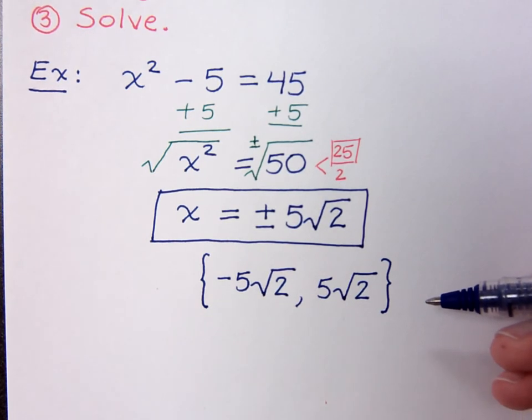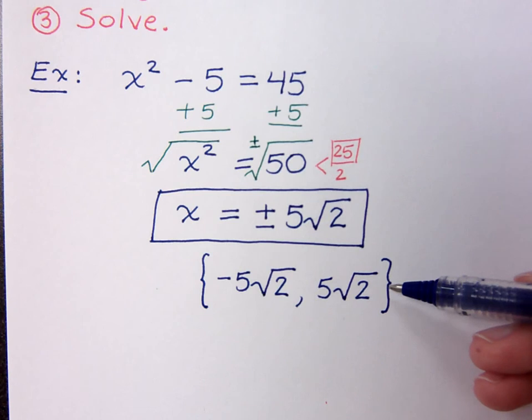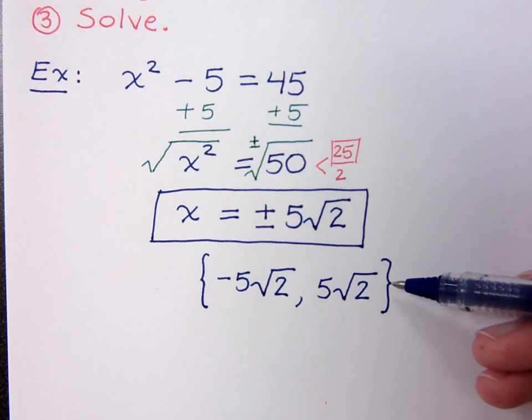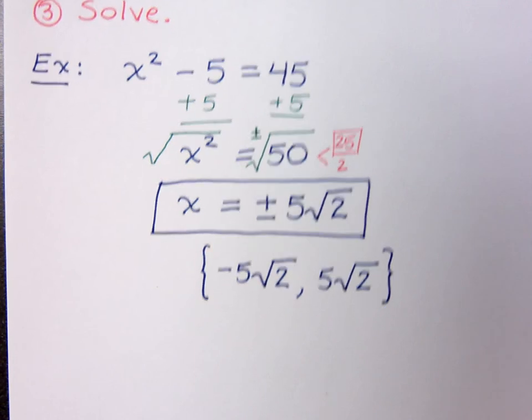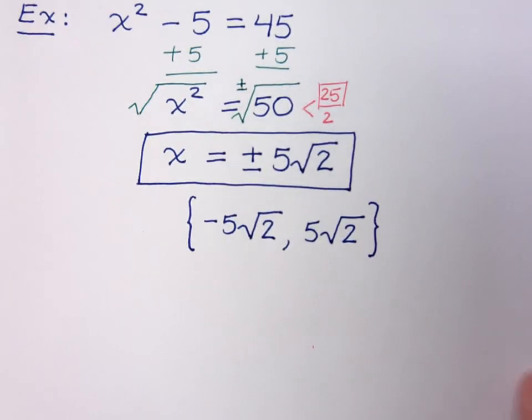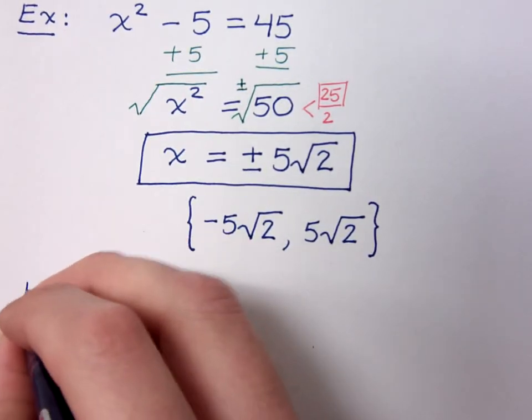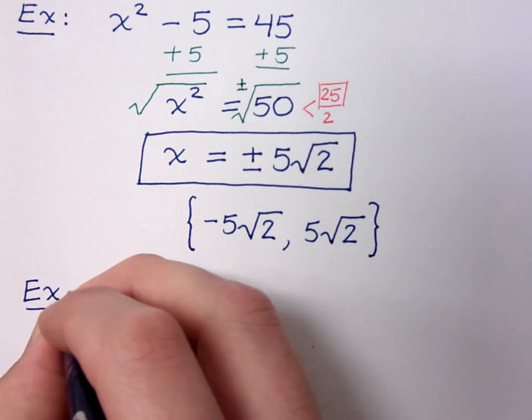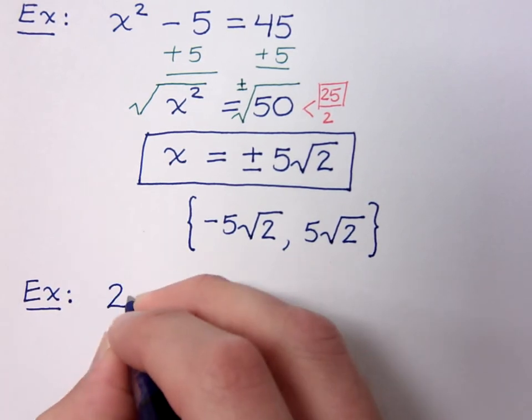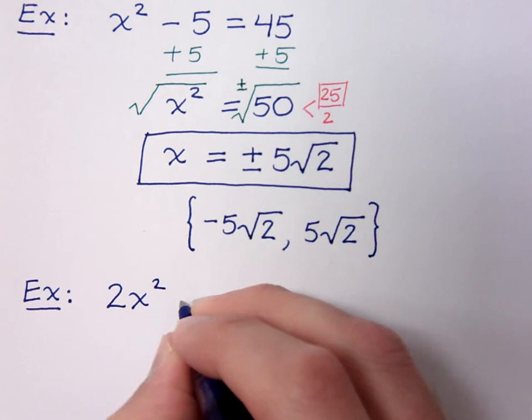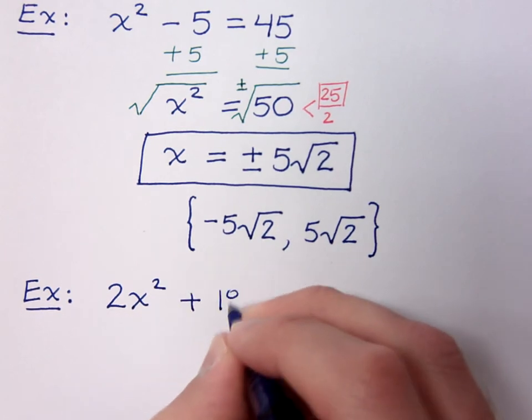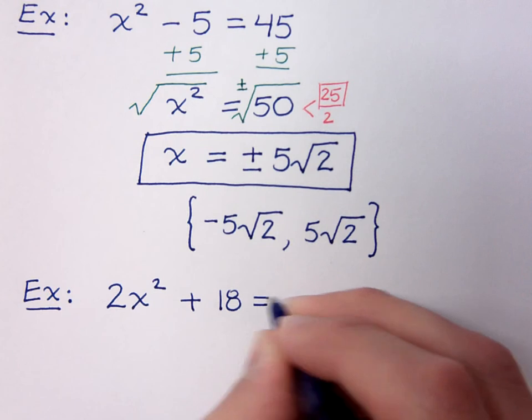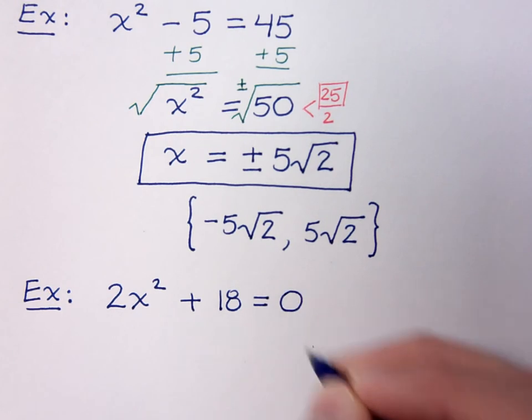So again, I don't care how you write this. You're probably going to see this on your final exam. That's the form they would use. Alright? Let's see what you guys can do with this example. This is one that always seems to mess up people. 2x squared plus 18 equals 0.